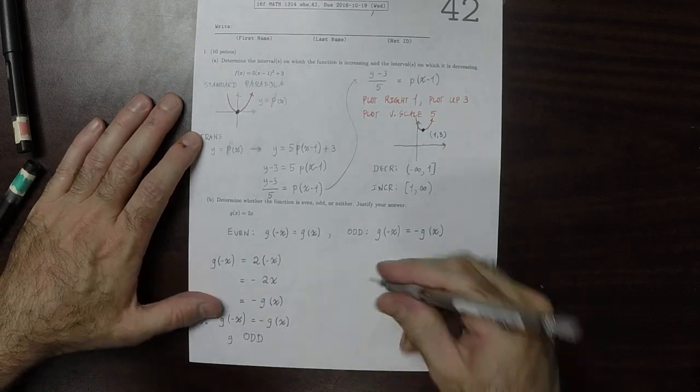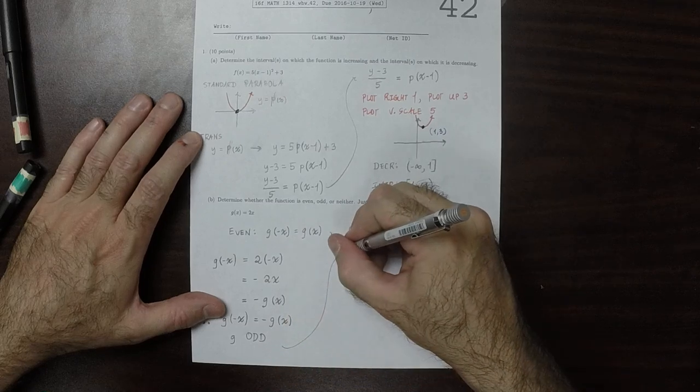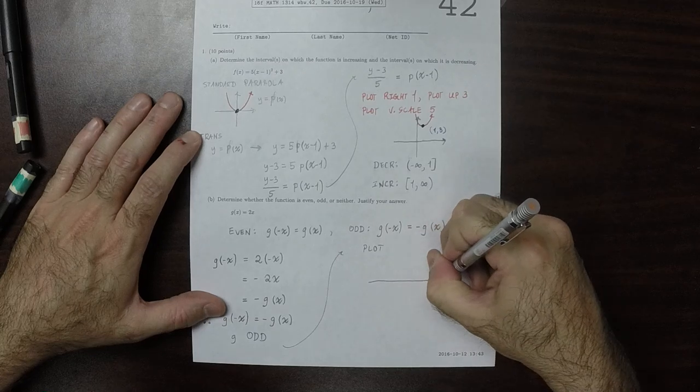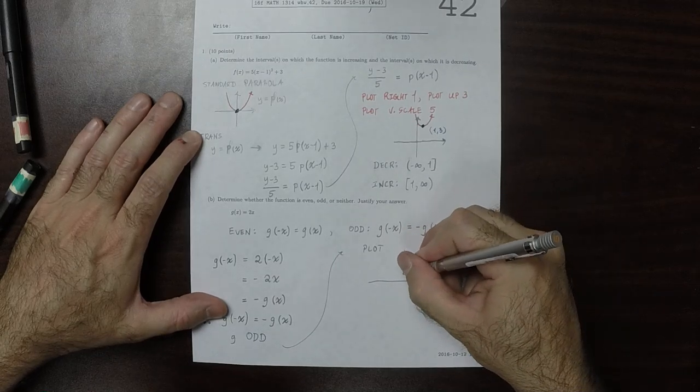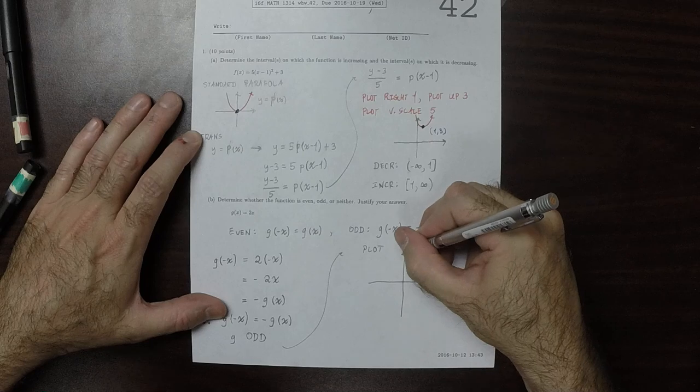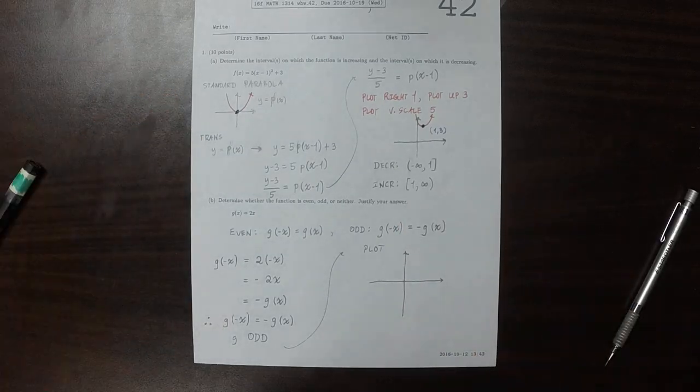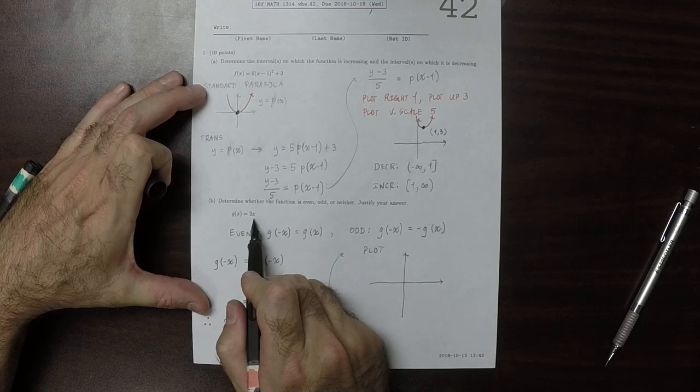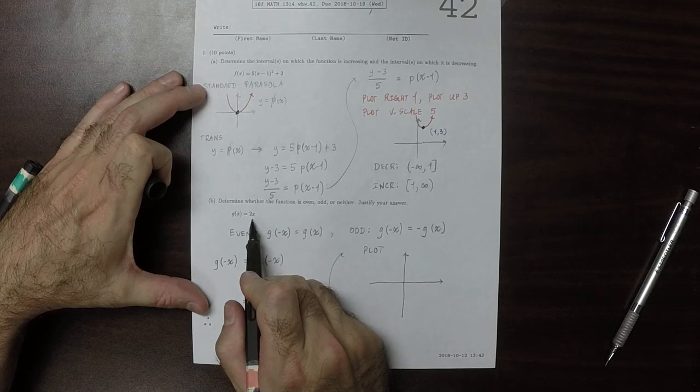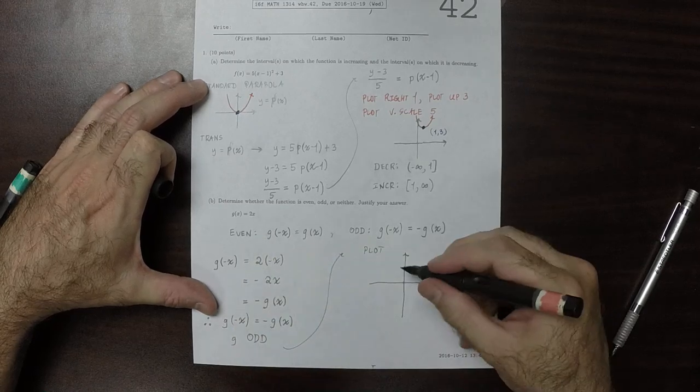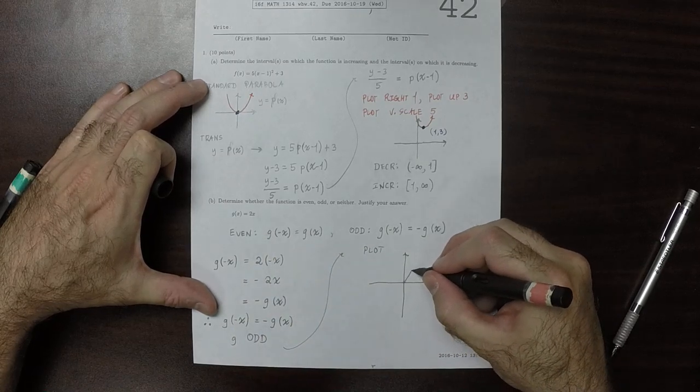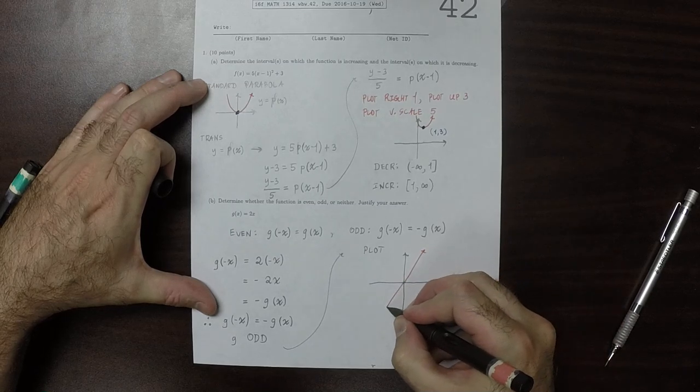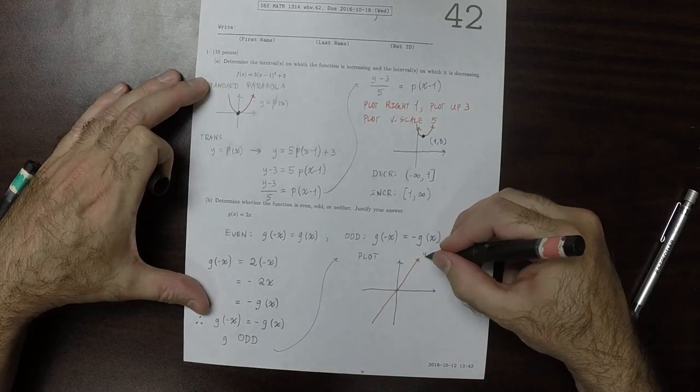Now, you could see that that is the case in another way because if you were to look at the plot of g, well, the plot of g of x is a line with y-intercept 0, which is to say it passes through the origin and slope 2. So this is g of x. So this is y is g of x.